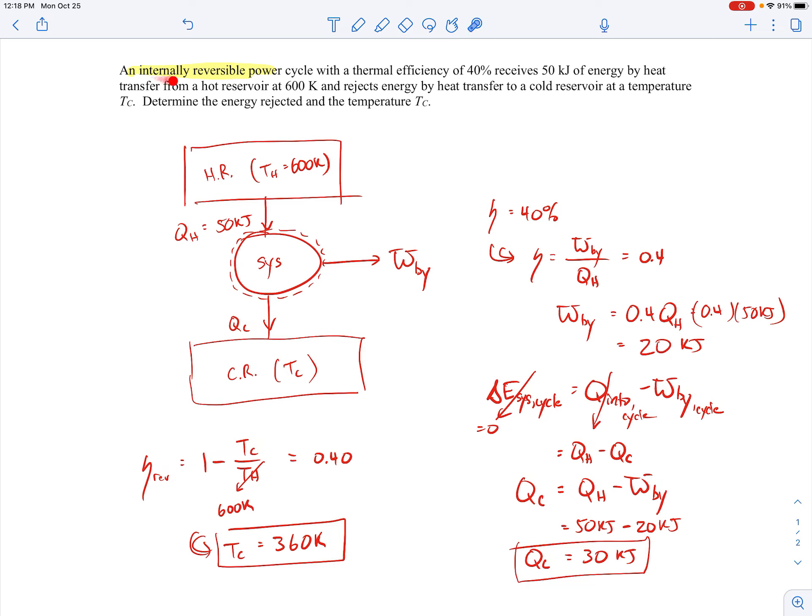So the key to doing that part of the problem is recognizing that it's an internally reversible power cycle, so knowing that the efficiency can be found from the absolute temperatures of the reservoirs. And since we know, since we're given that the efficiency is 40%, we can calculate what the TC is from that. Okay, we'll go ahead and end the example.